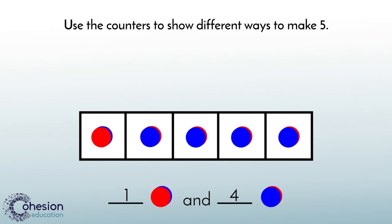Let's look at another way to make the number five using our counters. Students should place two red counters in the five frame and fill the rest of the five frame with blue counters. Two red counters and three blue counters show another way to make the number five.